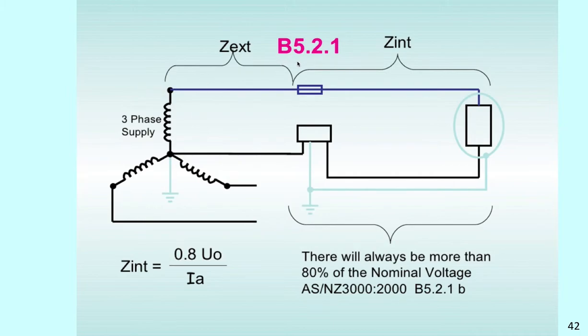Using table B5.2.1. Again, to summarize. We have Z or impedance external. And we have impedance internal. Basically, we have no control over the impedance external. And normally the supply authority will provide information of what they expect the impedance to be at the point of supply. And then after that, it's up to you as the electrician to calculate the internal impedance and work out the final fault loop current.